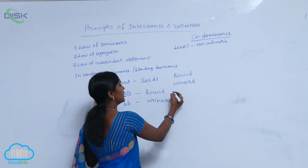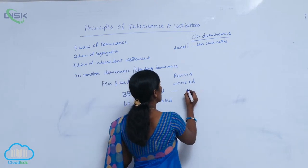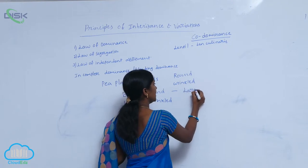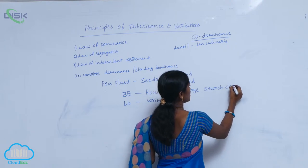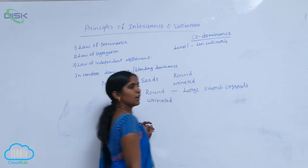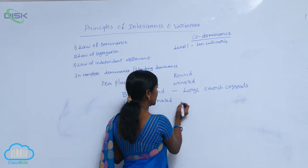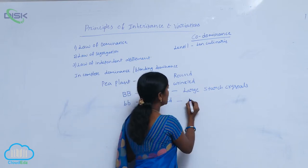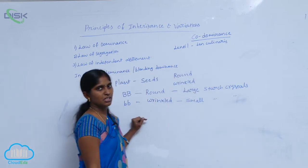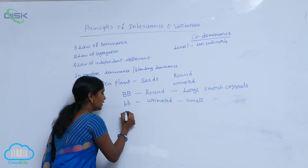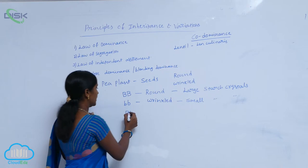When you take the round seeds and they are matured, they give large starch crystals. Large starch crystals are produced from matured round seeds. When you come to matured wrinkled seeds, after maturation they produce small starch crystals.